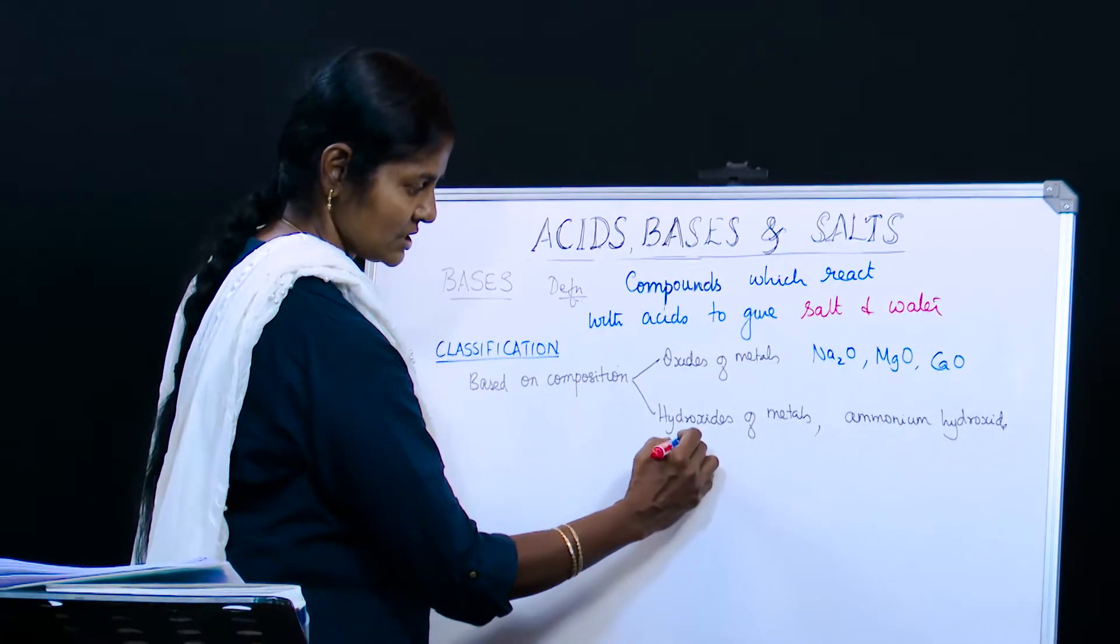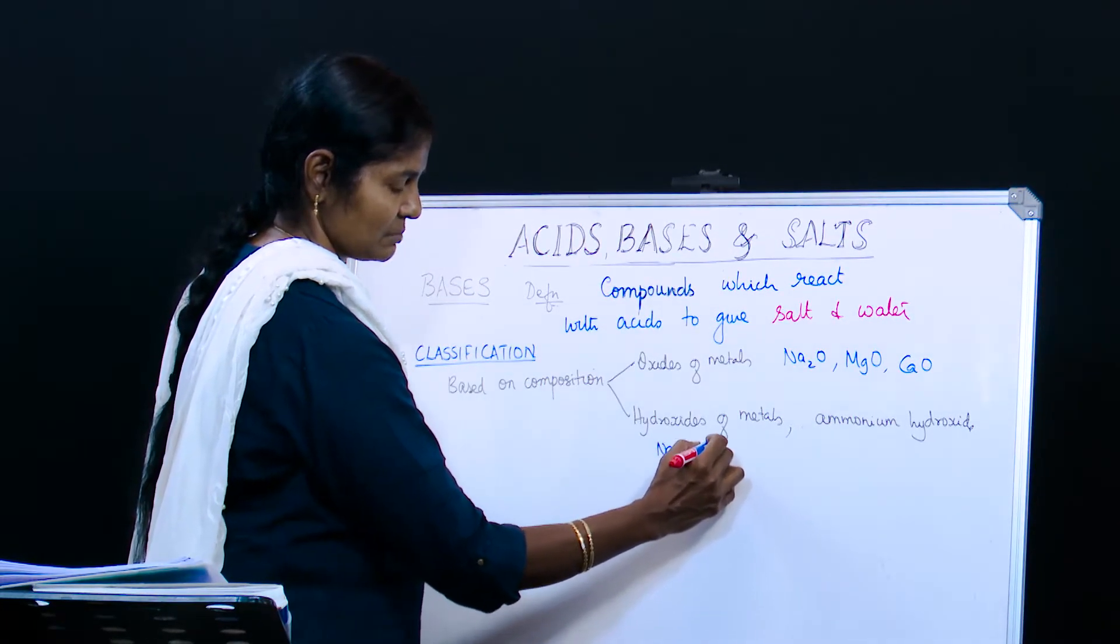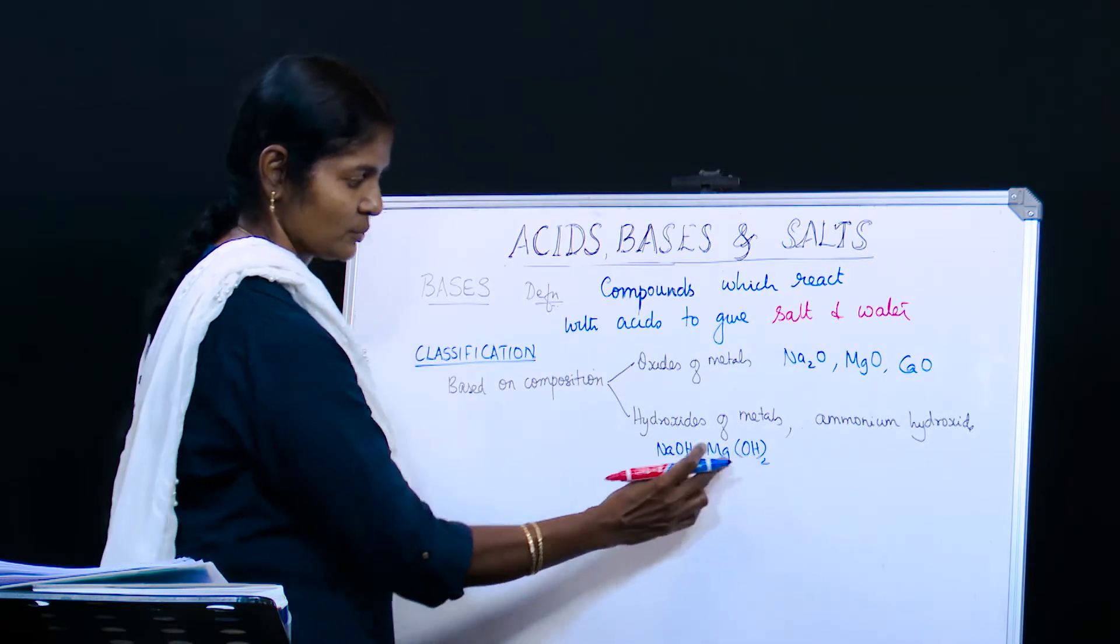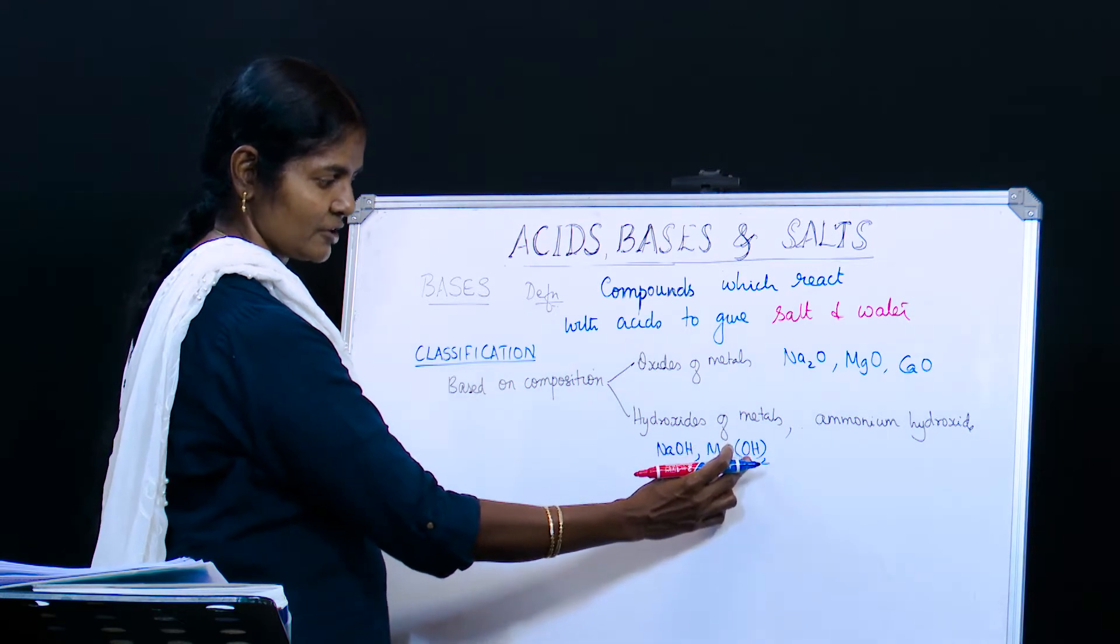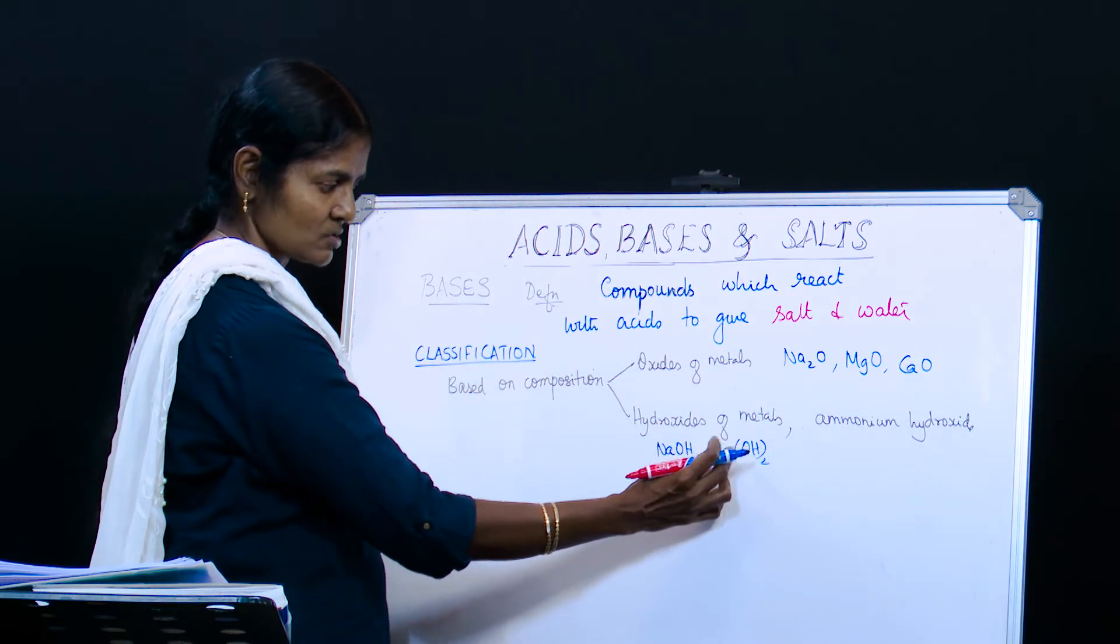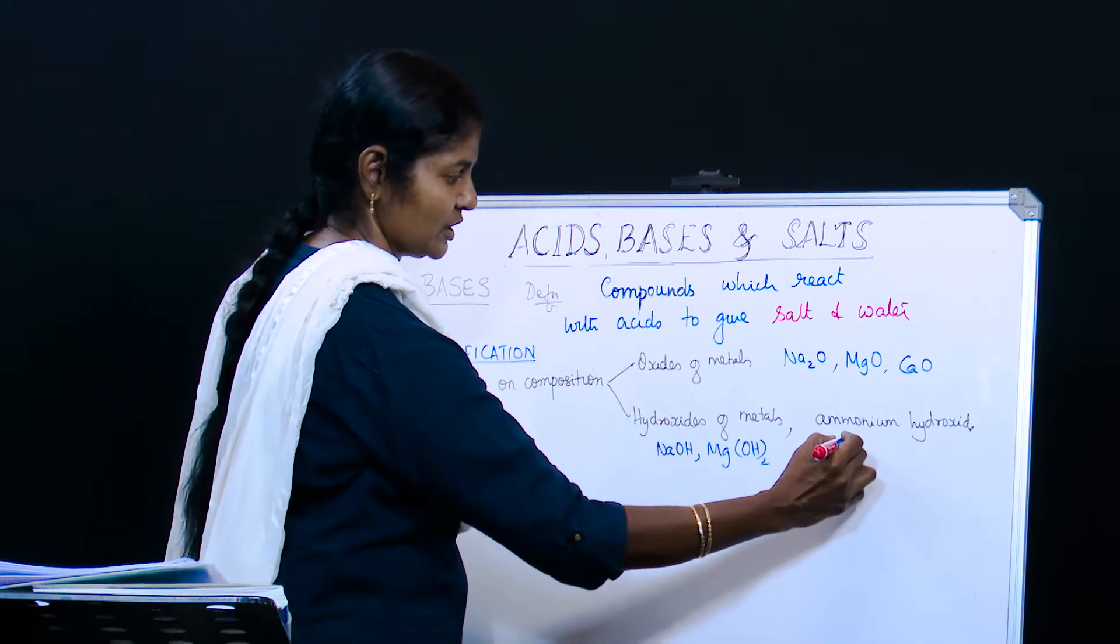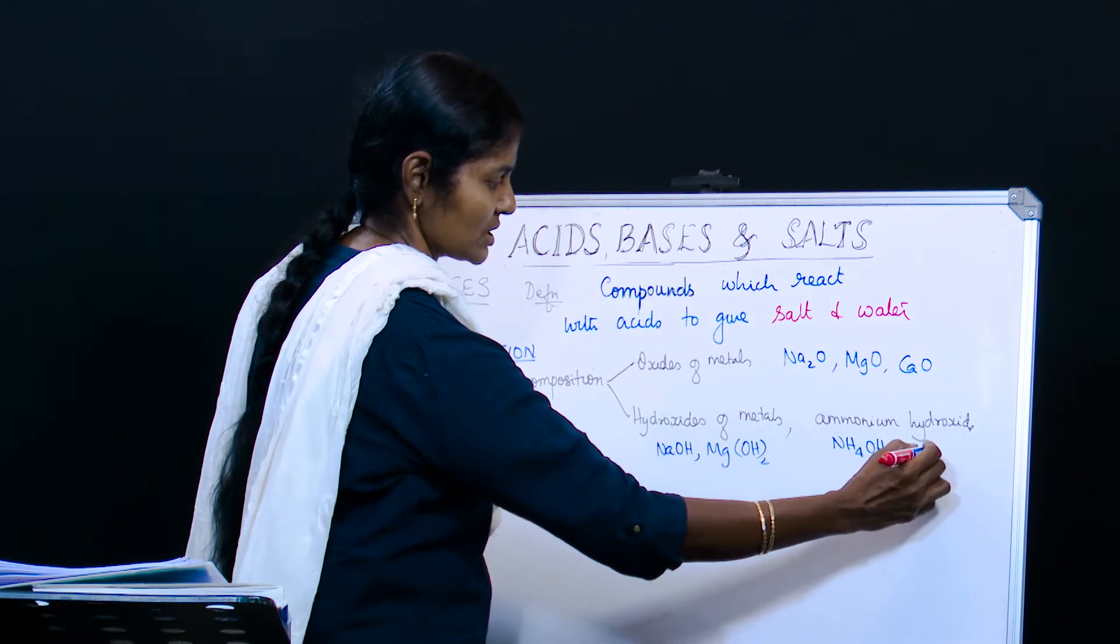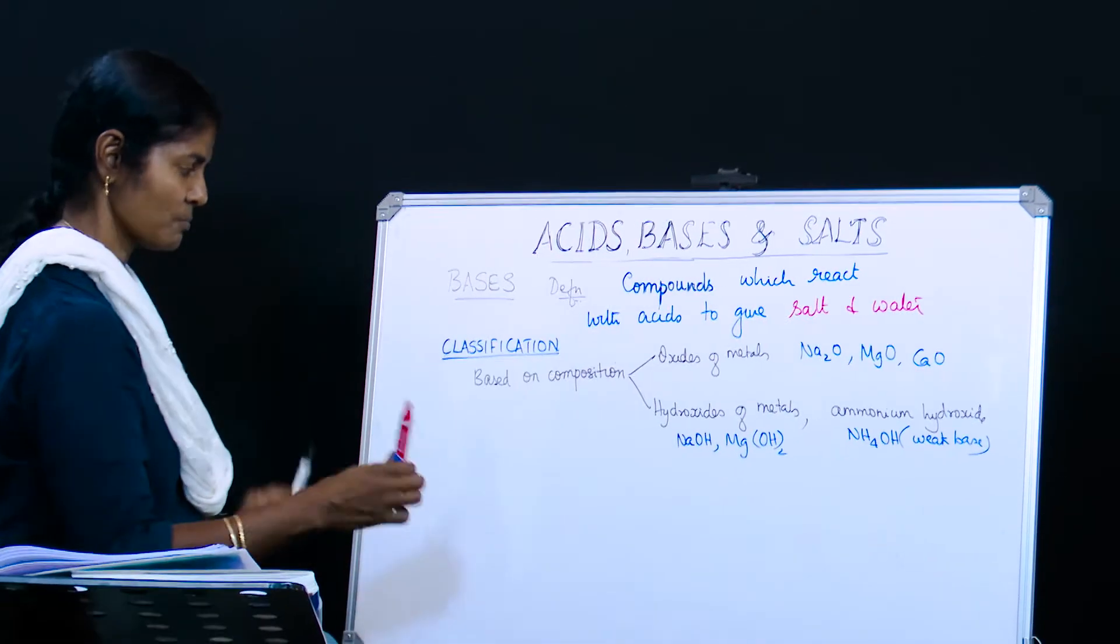For example, oxides of metals: sodium oxide, magnesium oxide, calcium oxide - these are all bases. When you come to hydroxides: sodium hydroxide, magnesium hydroxide Mg(OH)2. Why do we write 2 here? Because magnesium is divalent and hydroxyl ion is monovalent. So when you criss cross you get 2 here. Ammonium hydroxide NH4OH which is a weak base. So this is based on composition.